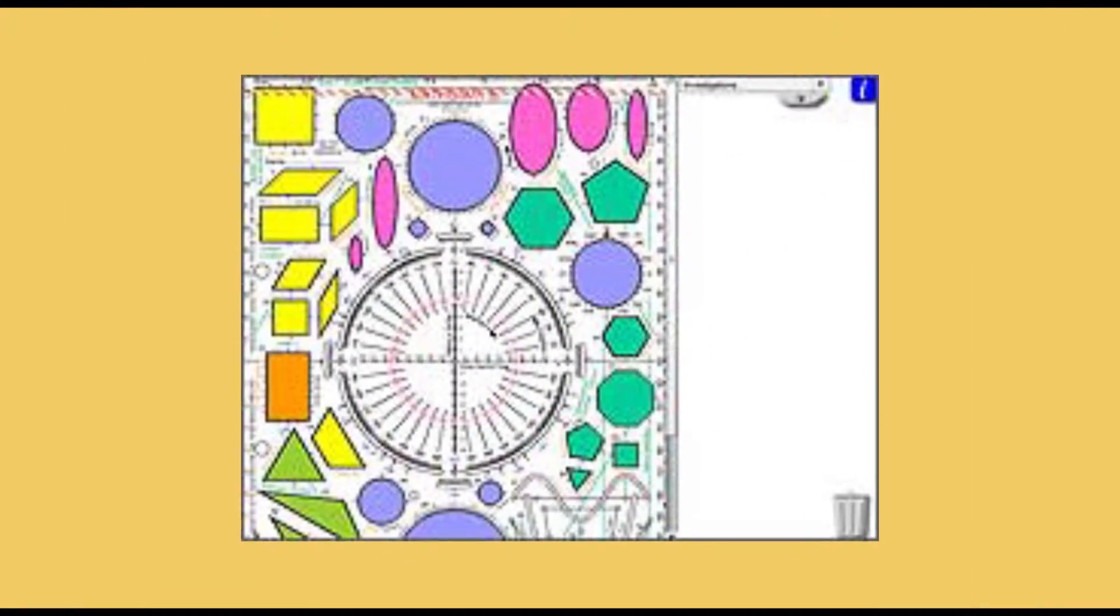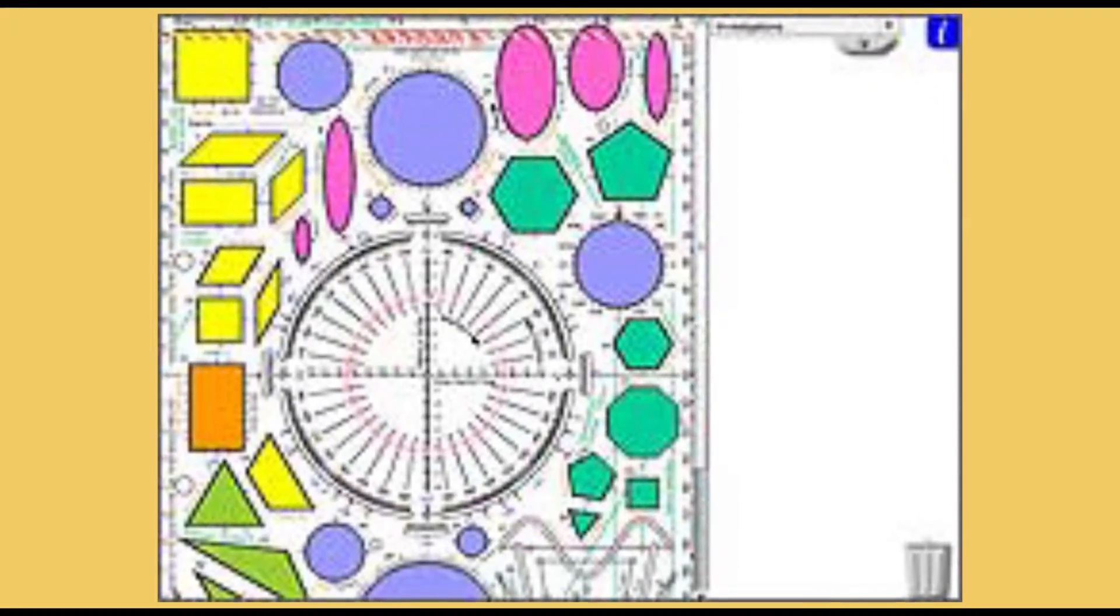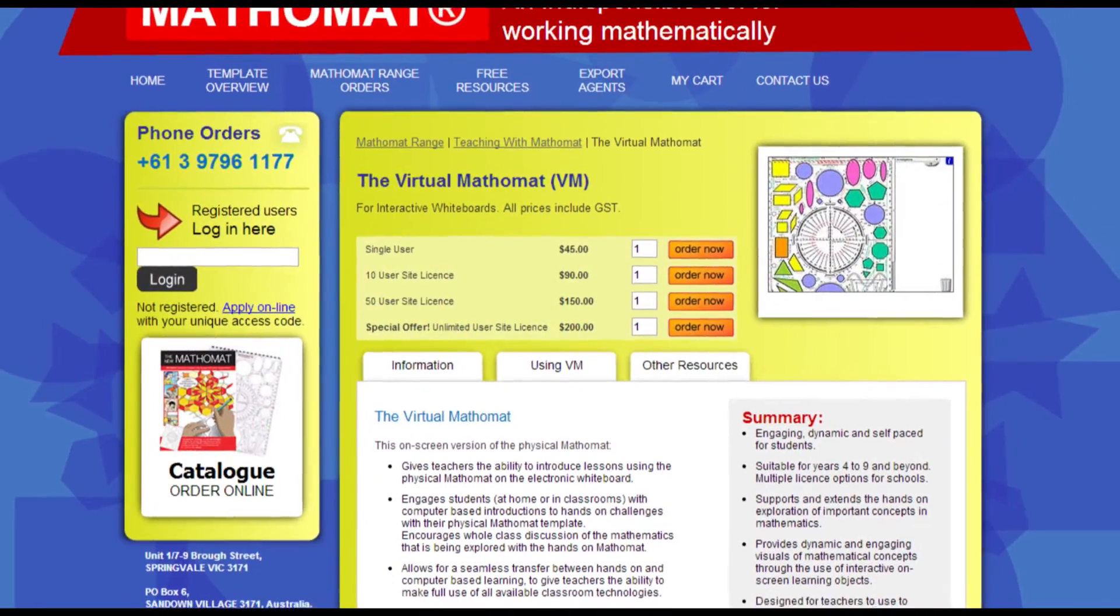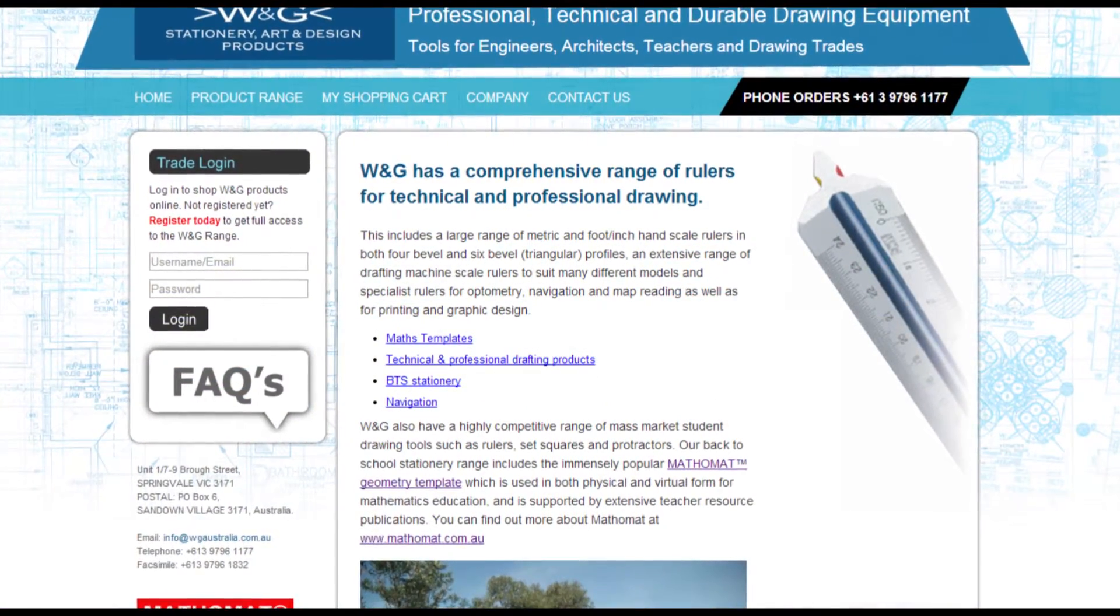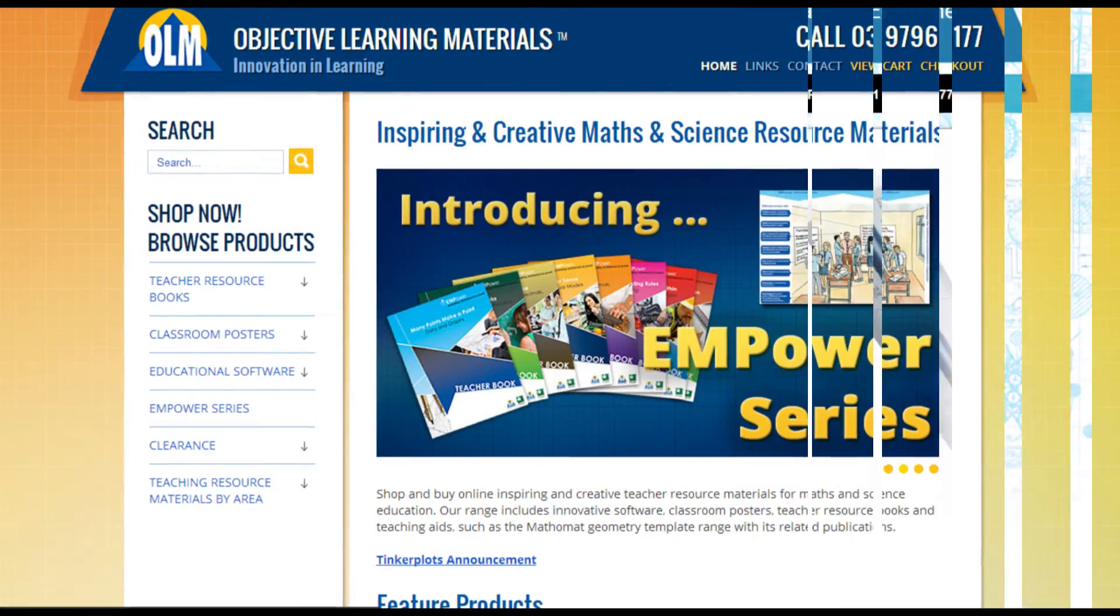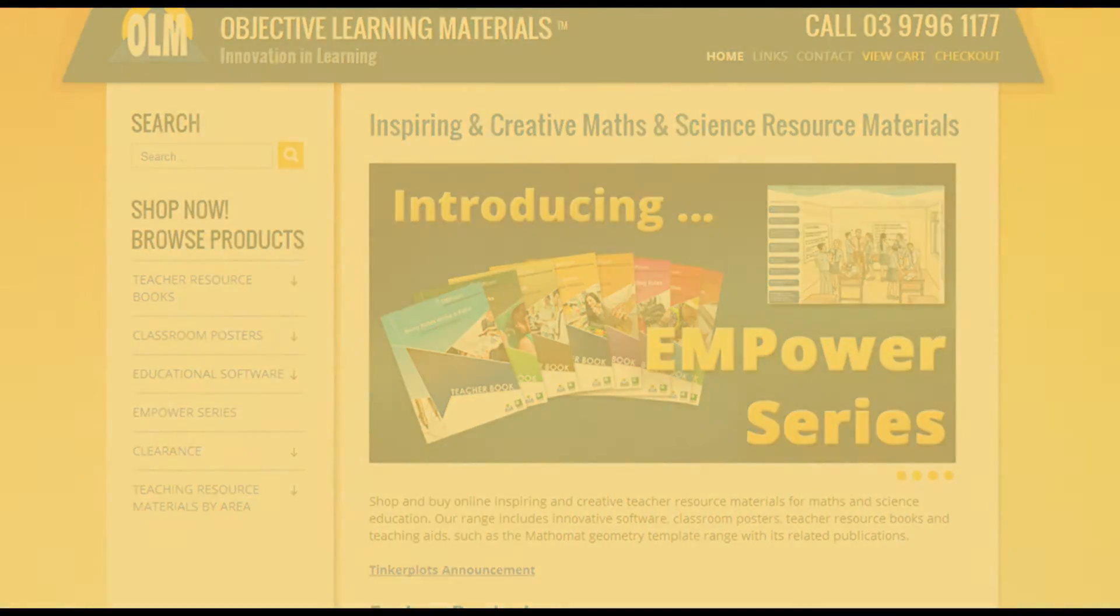Virtual Mathemat. A software version of the physical Mathemat is downloadable from our website. Mathemat is the property of W&G Education and is distributed in Australia via Objective Learning Materials and in Africa via ERA Distributors.